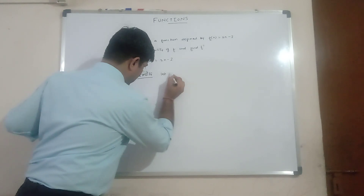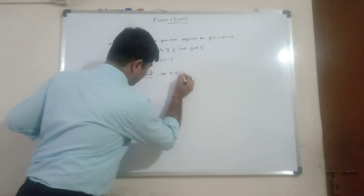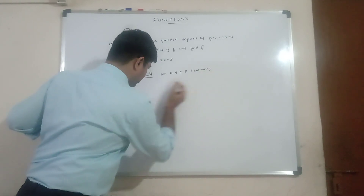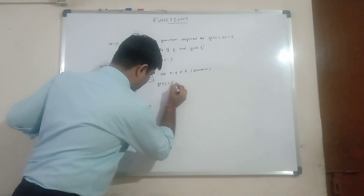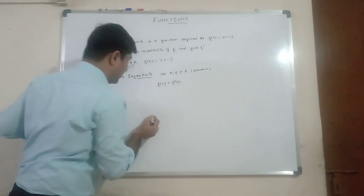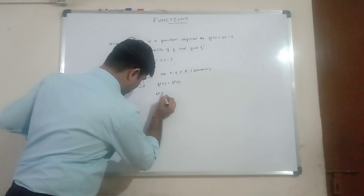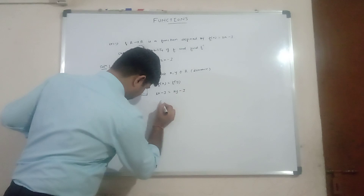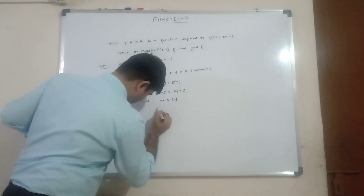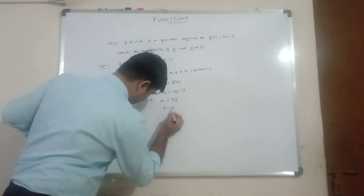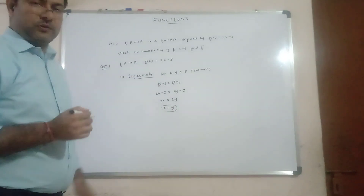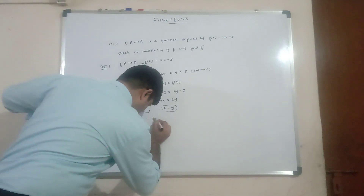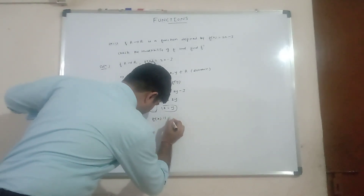Checking injectivity: let two elements x and y belong to R (the domain) such that f(x) = f(y). Therefore 2x − 3 = 2y − 3, so 2x = 2y, and therefore x = y. Since f(x) = f(y) implies x = y, f is injective (one-one).